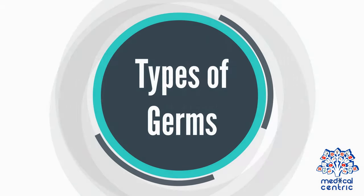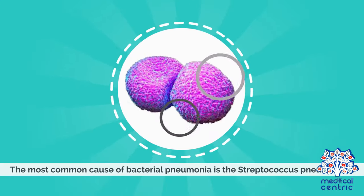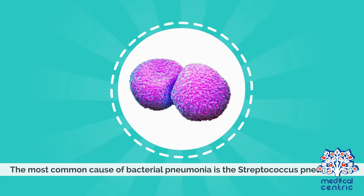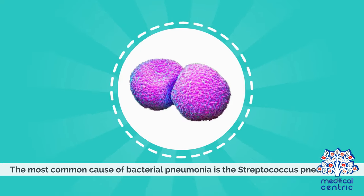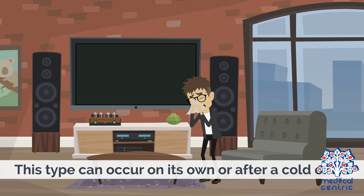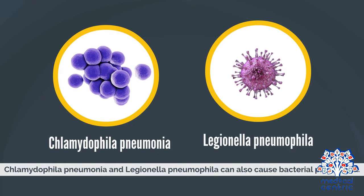Types of Germs — Bacteria. The most common cause of bacterial pneumonia is Streptococcus pneumoniae. This type can occur on its own or after a cold or flu. Chlamydophila pneumoniae and Legionella pneumophila can also cause bacterial pneumonia.